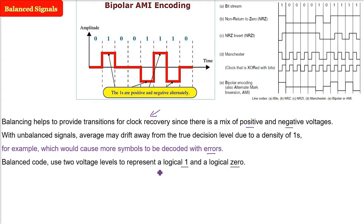we use two voltage levels. For example, plus 1 volt for a 1 bit and negative 1 volt for a 0 bit. This is how it will be balanced, and we will be able to represent 1 and 0.